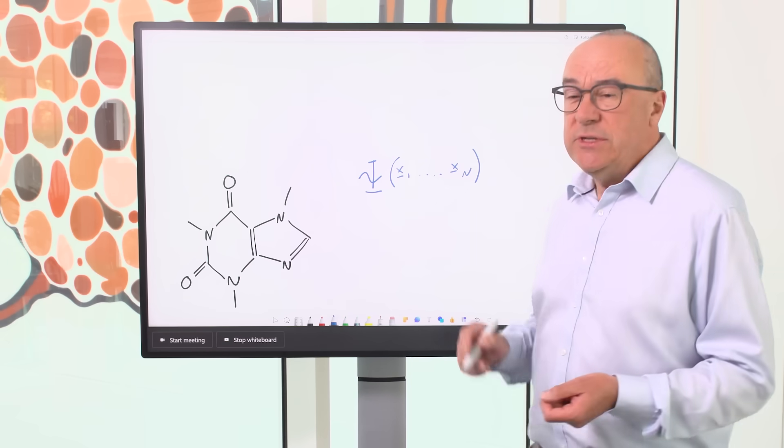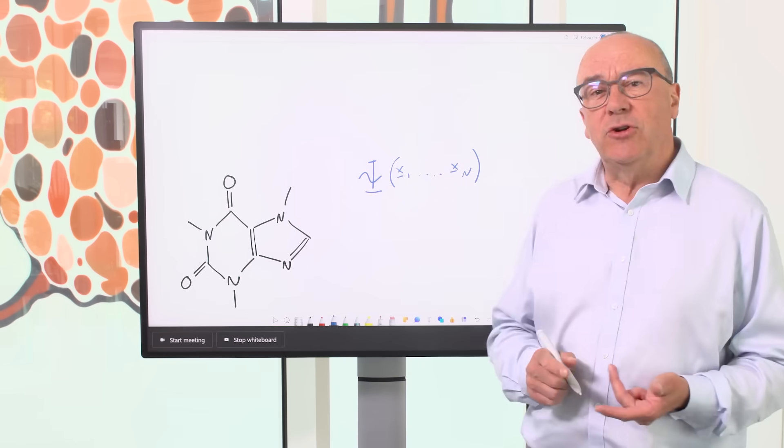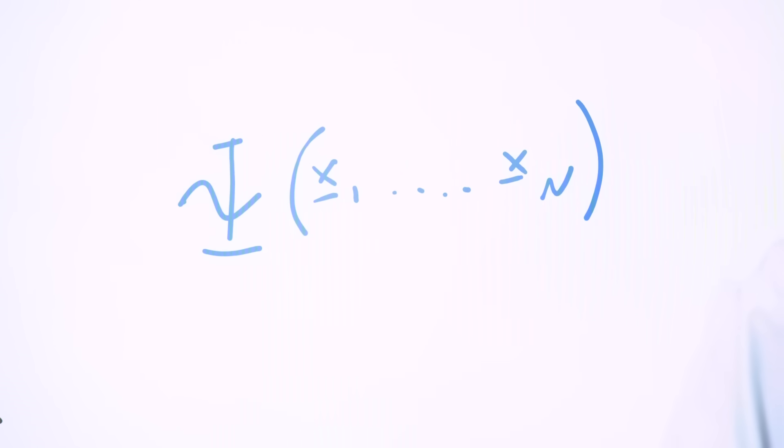Now, each of those positions is a point in three-dimensional space. So with just over a hundred electrons, this quantity psi depends on just over 300 variables.